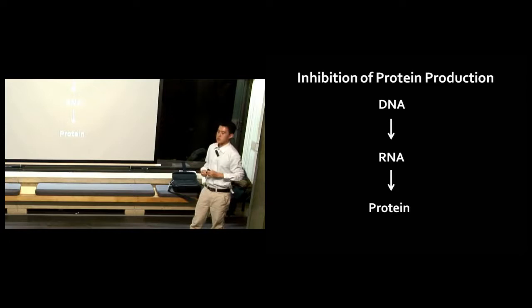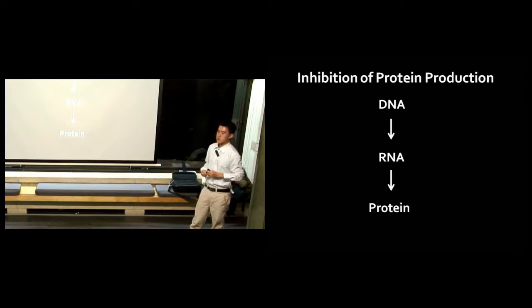Morpholino is an inhibitory system. You can use it to inhibit literally anything you want, as long as you know your target. If we go back to biology 101, DNA is transcribed into RNA, which is translated into protein. Morpholino blocks the translation process, so you don't get protein product at the end. That's the first component, the inhibitory component.